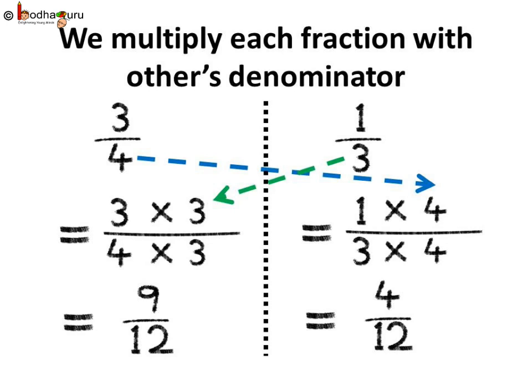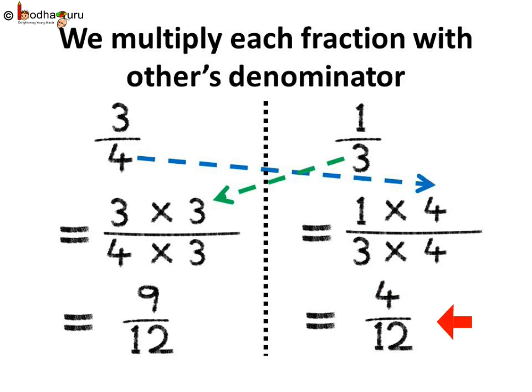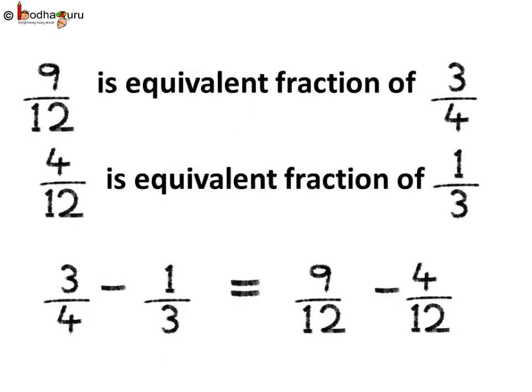One by three can be written as one into four divided by three into four, which is equal to four by twelve. So, we get their equivalent fractions. Nine by twelve is an equivalent fraction of three by four, and four by twelve is an equivalent fraction of one by three. So, three by four minus one by three is the same as nine by twelve minus four by twelve.